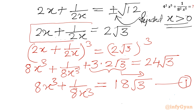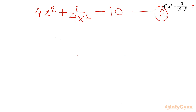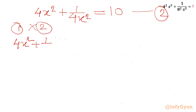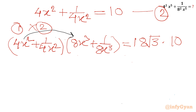Now I will consider squaring this equation — which we used earlier — to get 4x² + 1 over 4x² equal to 10. Let us call this equation number 2. Now let us consider equation 1 times equation 2: (4x² + 1/4x²) times (8x³ + 1/8x³). Expanding the LHS: 8 times 4 gives 32x⁵, and the other diagonal product gives 1 over 32x⁵.